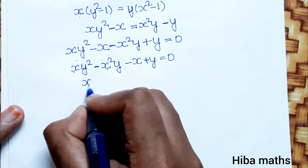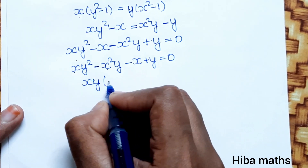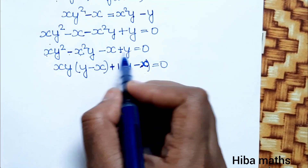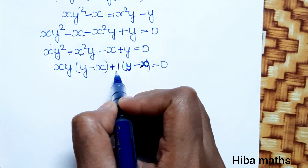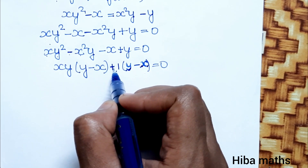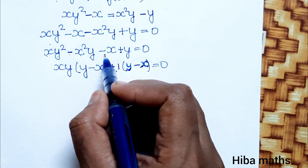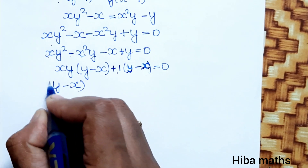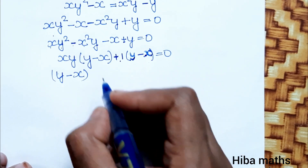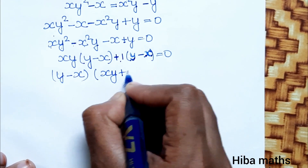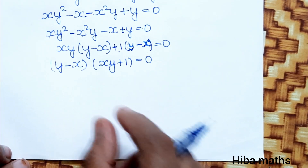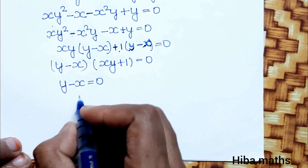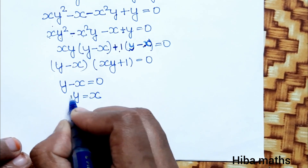From xy squared minus x squared y minus x plus y equals zero, we factor. Grouping gives xy(y minus x) minus 1(x minus y) equals zero, which simplifies to (y minus x)(xy minus 1) equals zero. So either y minus x equals zero, meaning y equals x. This is the first result.